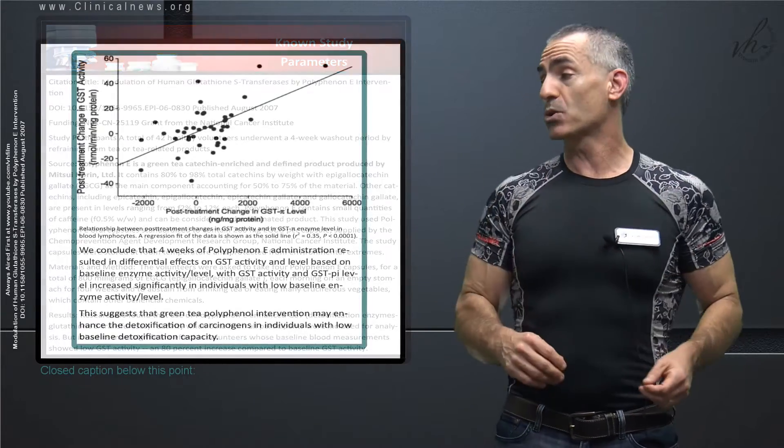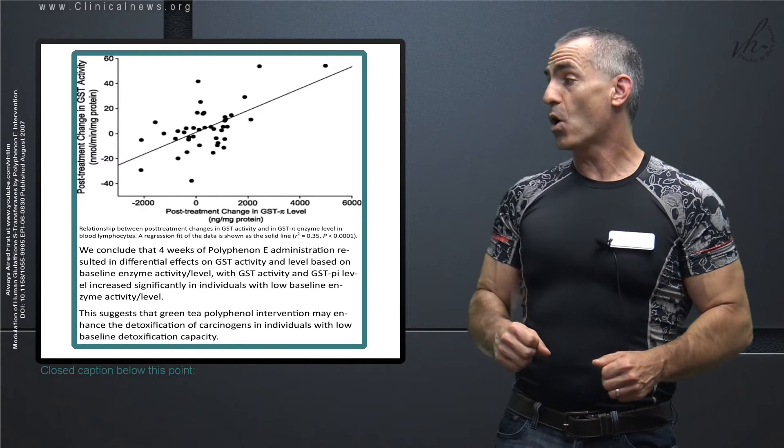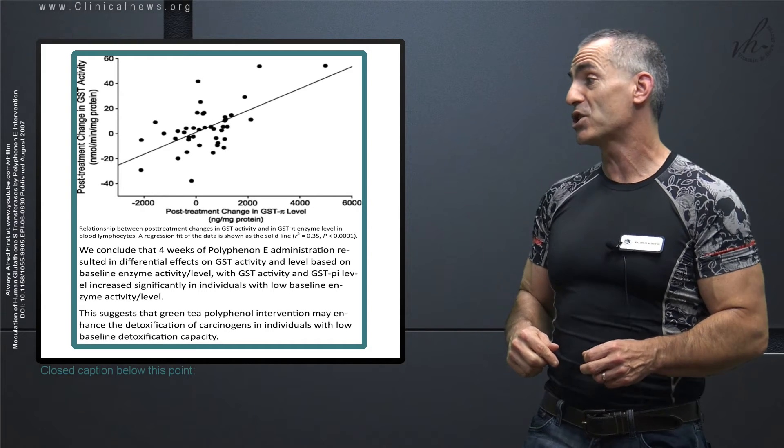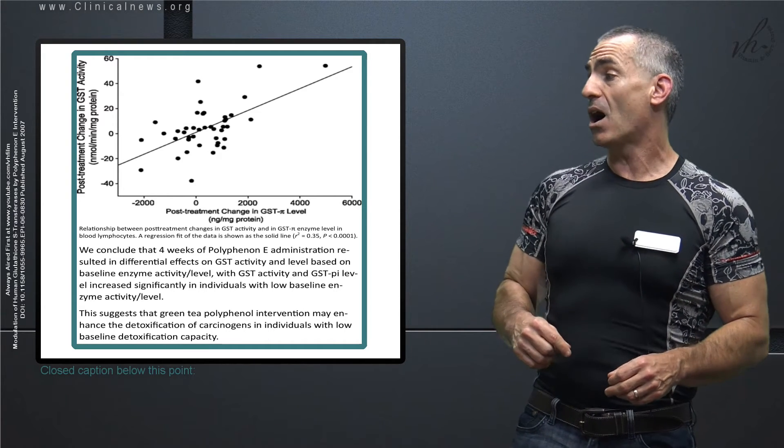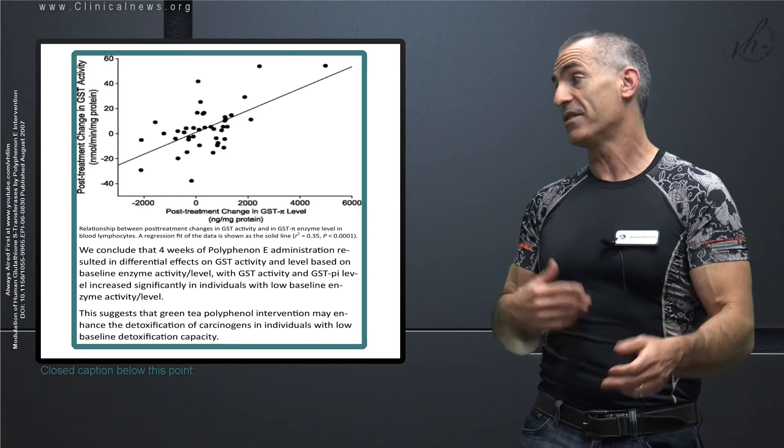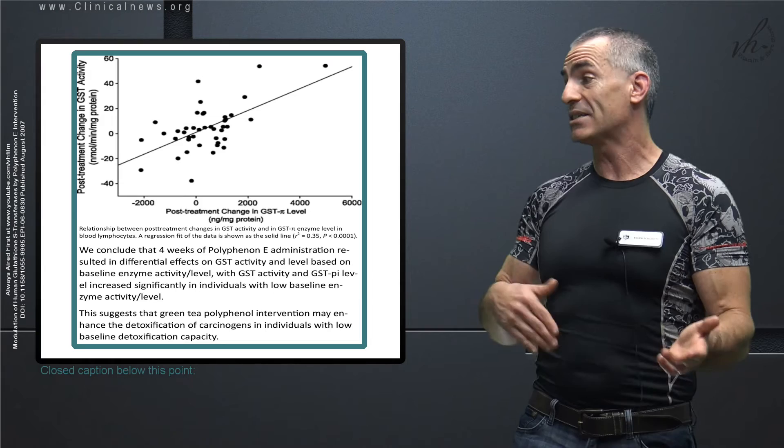To further delve into the research as follows. The researchers state, we conclude that four weeks of polyphenol E administration resulted in differential effects on GST activity and level based on baseline enzyme activity. With GST levels increased significantly in individuals with low baseline enzyme activity level.